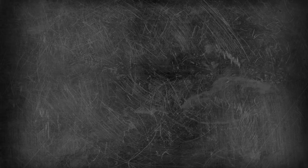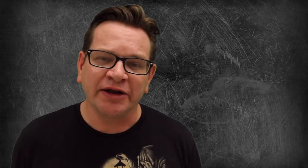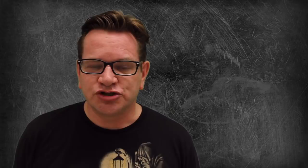The actual trial — the removal — happens in the Senate, and this is laid out in Article 1, Section 3. Let's read that: 'The Senate shall have the sole power to try all impeachments. When sitting for that purpose, there shall be an oath or affirmation. When the President of the United States is tried, the Chief Justice shall preside, and no person shall be convicted without the concurrence of two-thirds of the members present.' So it takes 67 senators today to convict and remove a president from office — that's a high bar.